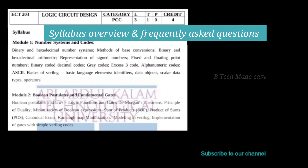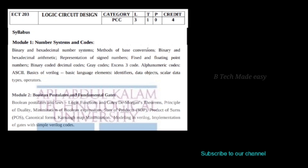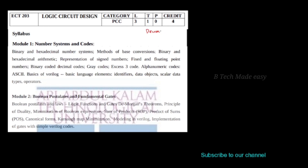We first start with Binary and Hexadecimal Number Systems. There are several types of number systems: decimal number system, binary number system, hexadecimal number systems, octal number systems, and so on.